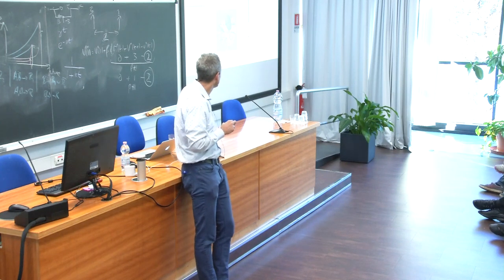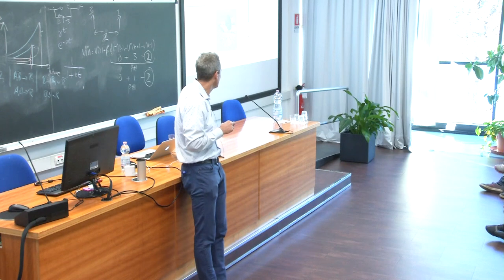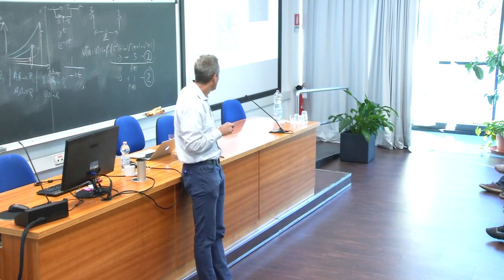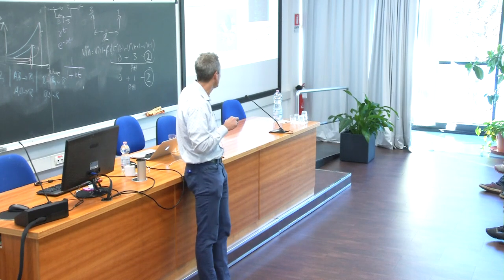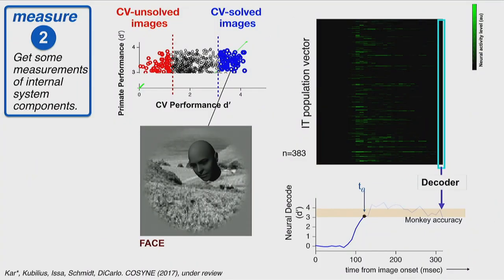Here's one of the relatively easy-for-both-systems images — a face on an uncorrelated naturalistic background. There's the sliding decode out of IT, and here's the monkey-level accuracy. The total accuracy depends on the number of sites recorded — on the order of hundreds of sites. But we have the same number of sites for each image, so we compare across images. You see that this actually gets up to monkey-level performance — around 3-4 D-prime units — at about 110 milliseconds, which is around when IT neurons have their latencies.